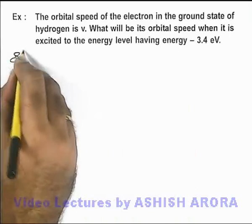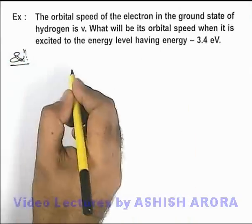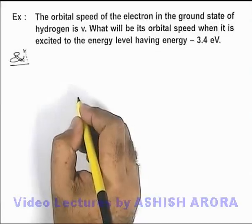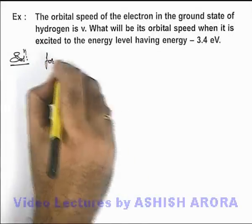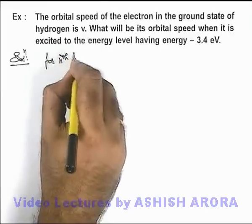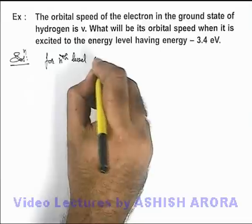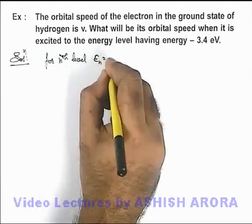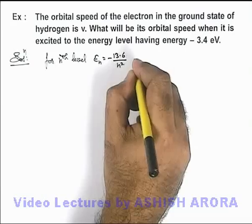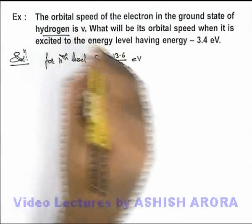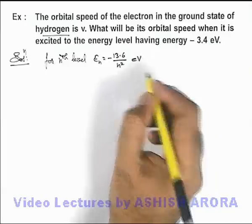First, we can calculate the energy level where energy is minus 3.4 electron volts. As we know, for the nth level, energy is given as En = -13.6/n² electron volts. I have taken z = 1 because we are talking about hydrogen.